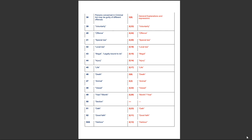Section 45 of the Indian Penal Code defines the term 'life', whereas section 2, clause 17 of the BNS defines the term 'life'. Section 46 of the Indian Penal Code defines the term 'death', whereas section 2, clause 6 of the BNS defines the term 'death'. Section 47 of the IPC defines the term 'animal', whereas section 2, clause 2 of the BNS defines the term 'animal'. Section 48 of the IPC defines the term 'vessel', whereas section 2, clause 32 of the BNS defines the term 'vessel'.